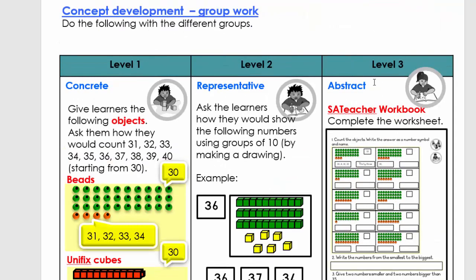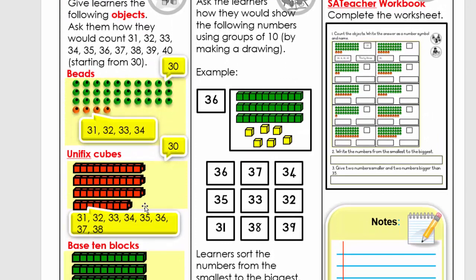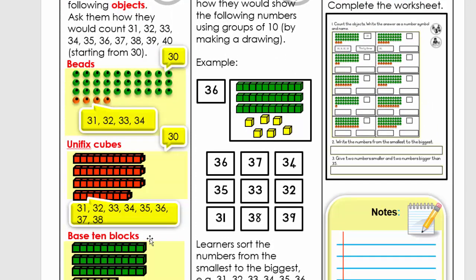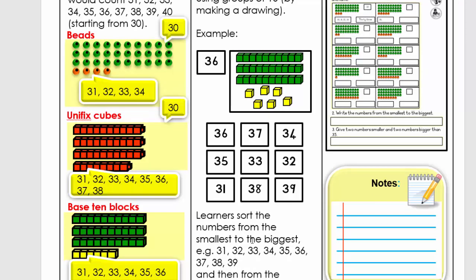We then go to the different levels. So the concrete, representative, and abstract. Remember, if your child's still struggling, you need to do it concretely with them. Then you can show them the pictures, like in the worksheet, they give you the number. And then you can ask them certain questions. So we work now from 31 to 39. First, let's write these numbers from the smallest to the biggest ascending order. Pause the video, write it from smallest to the biggest, and then write it from the biggest to the smallest.